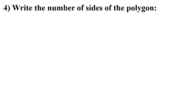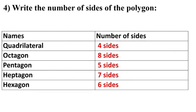The next question is given: write the number of sides of the polygon. The name of polygons are given and number of sides we have to write. The quadrilateral has four sides. Octagon has eight sides. Pentagon has five sides. Heptagon has seven sides. Hexagon has six sides. The number of sides are given to the right side with the red pen.